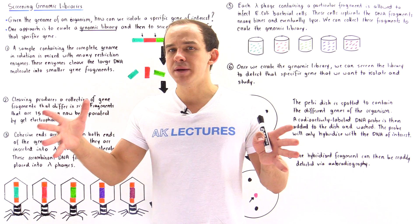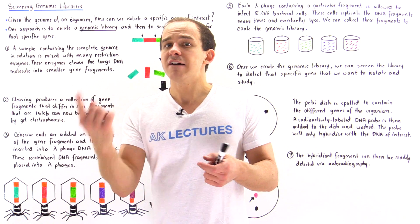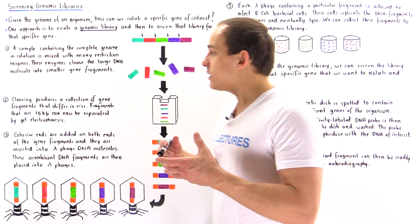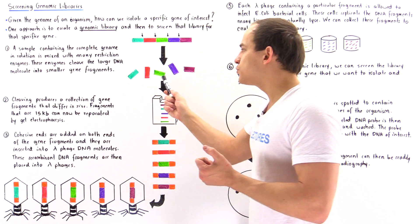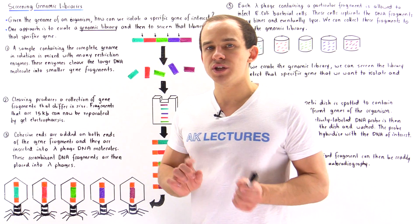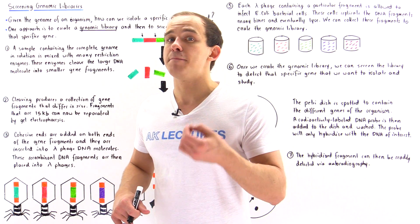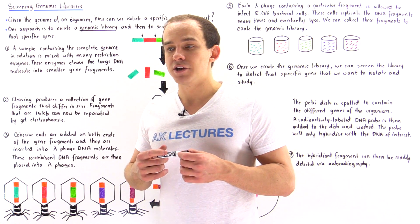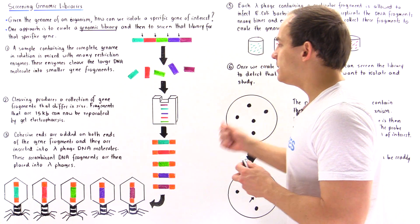So now we essentially have these five beakers, and in each one we have a single type of gene. The problem is we only have one copy of each gene, but to actually work with them we need many copies. So in the next few steps, we want to amplify — make many copies of each one of these genes. One way to do it is to use a plasmid, but in this lecture we'll use a different type of vector known as a lambda phage. A lambda phage is a bacteriophage that infects bacterial cells such as E. coli, and we can use it to infect bacterial cells so they can replicate that DNA of interest.